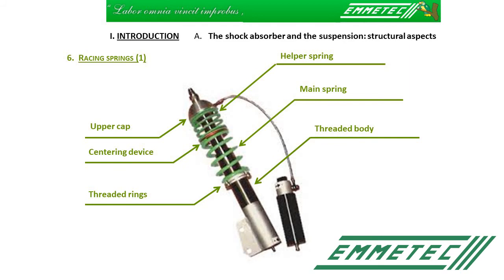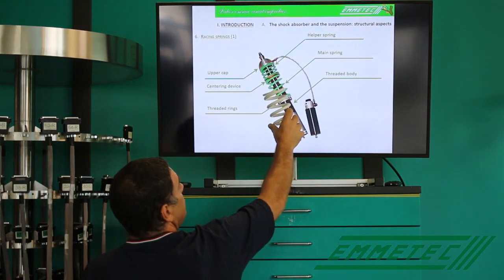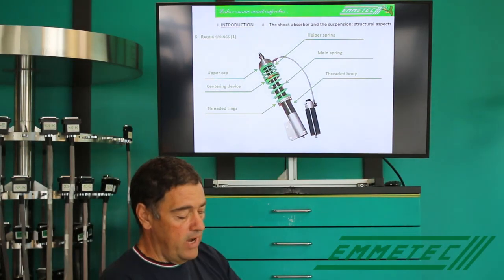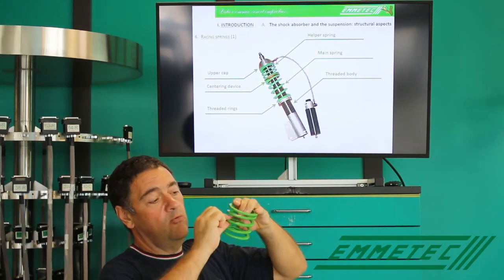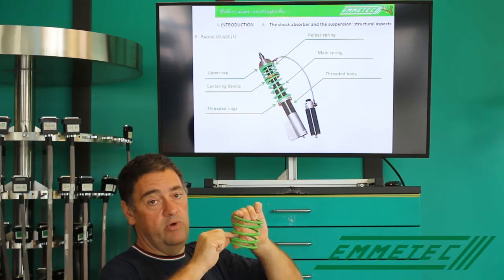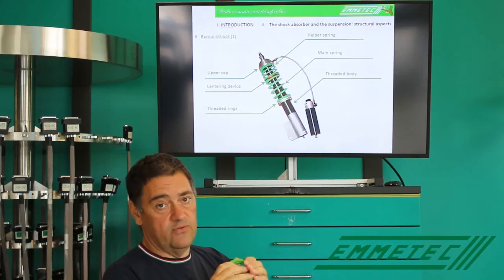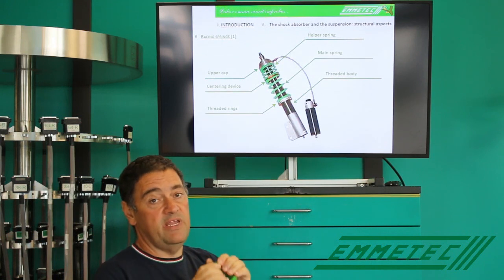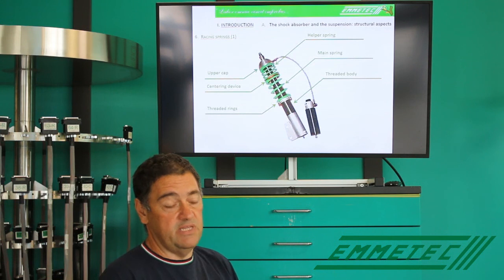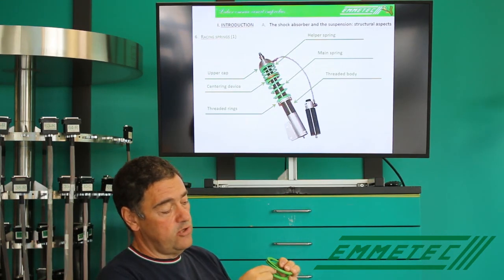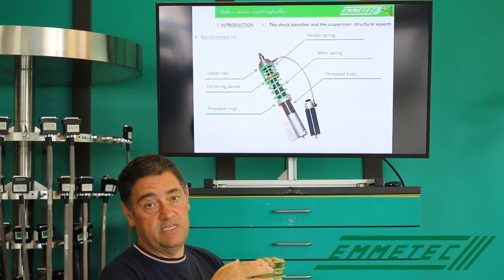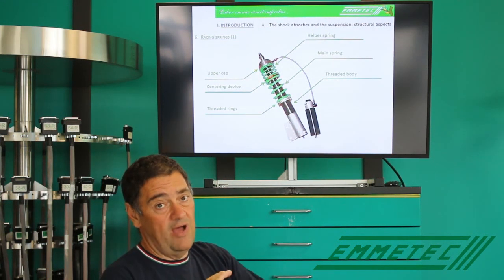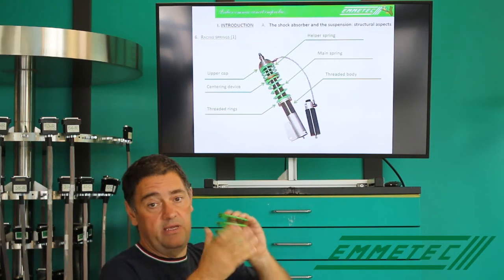This is the main spring and this is the helper spring. The main spring is a standard spring with round wire, while the helper spring is a special spring where the wire is not round — it is square. The main spring is also very soft. Here we had a spring of 175 kilos per centimeter; in this case, the upper spring could be 20, 30, or 40 kilos per centimeter — very, very soft. Moreover, the stroke of this spring is more or less 3 centimeters. With a rate of 40 kilos per centimeter, after 3 centimeters of stroke — that is, after 120 kilos — the spring is completely closed and no longer works.